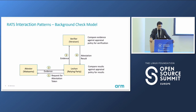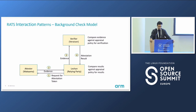This is another interaction pattern where communication is again initiated by the relying party. The relying party sends the request to the attester, the attester sends the evidence, and now the relying party communicates with the verifier directly to get the results verified. This is called the background check model because the attester doesn't know the verification is happening in the background.